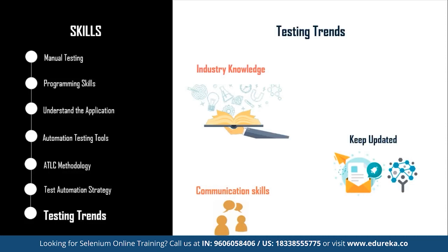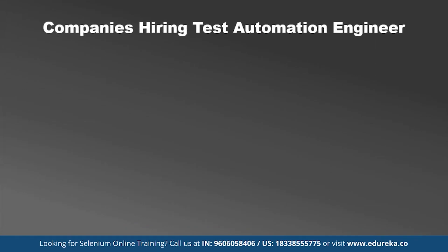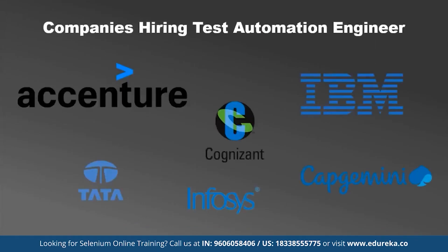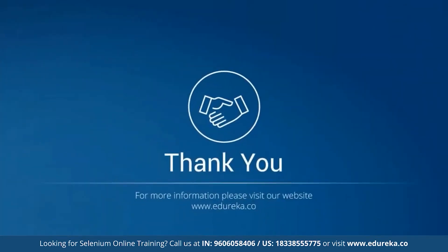Once you have mastered these skills, you are on your way to becoming a successful software test automation engineer. The top companies hiring for test automation engineers are Accenture, IBM, Cognizant, Infosys, TCS, and Capgemini. Do keep an eye for opportunities and utilize your skills to grab the offer. That was all about today's session — I hope this helps you prepare and get well versed with all the skills to become a successful test automation engineer. If you have any queries, put them in the chat section and we will get back to you. Thank you and happy learning.